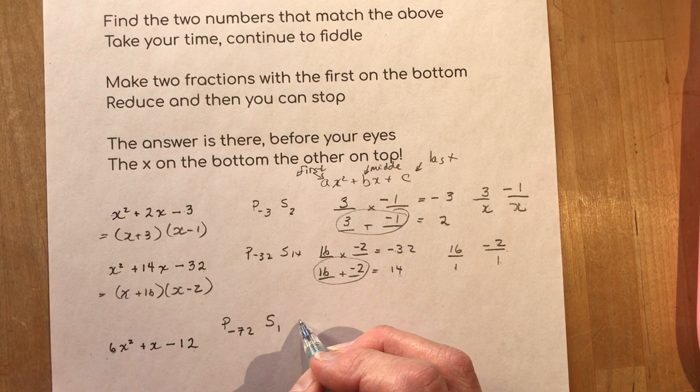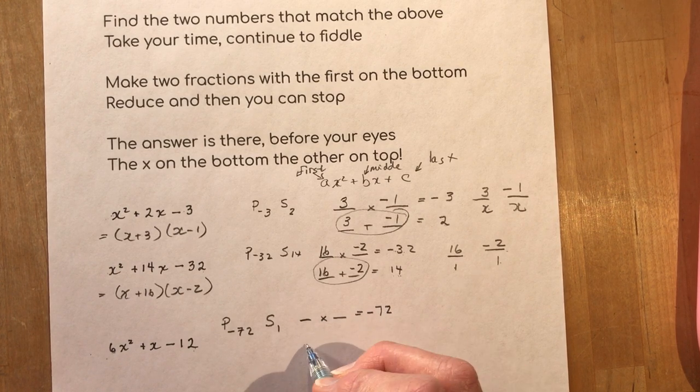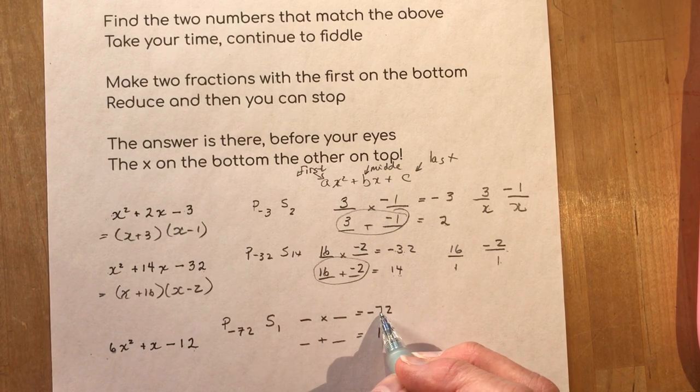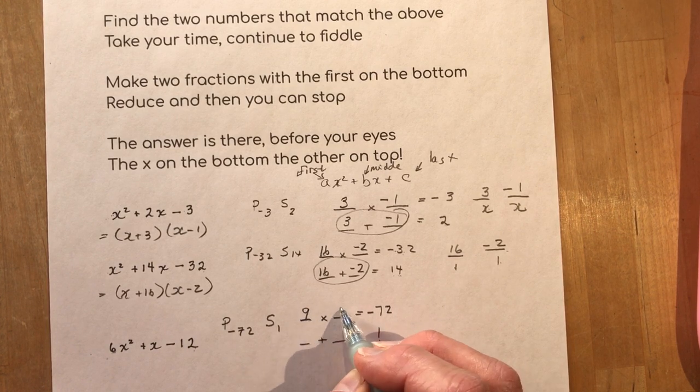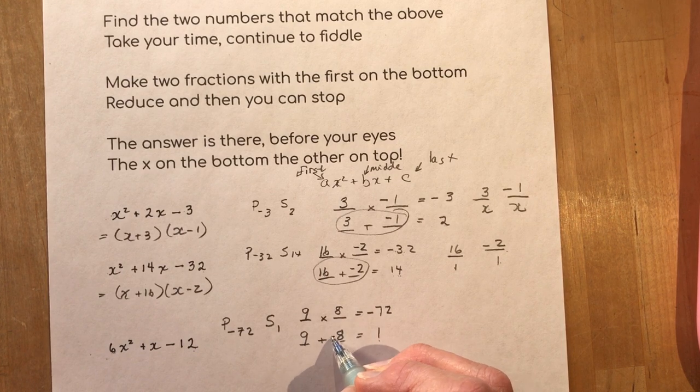I want two numbers that multiply to give me negative 72. The same two numbers add to one. So again we have a negative product and a positive sum. So our numbers you know that nine and eight makes 72. Which one is negative? Well obviously the eight.